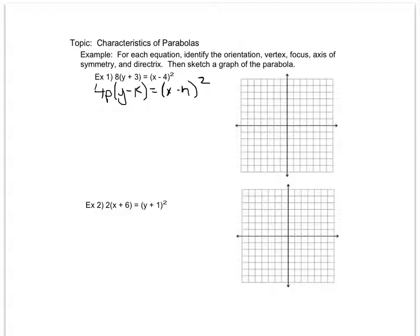So this is the open up or open down formula. I notice that in order for my equation to match this formula, it would mean that my p would have to be 2 in order for 8 to be equivalent to 4p. My k would have to be negative 3 because if I were to put negative 3 into the formula, that's what would give me a positive 3, and my h would have to be 4.